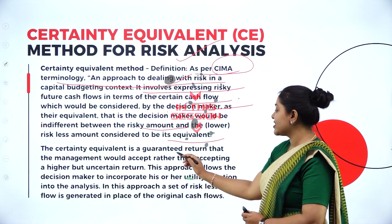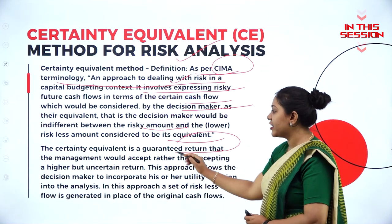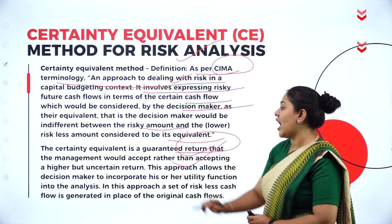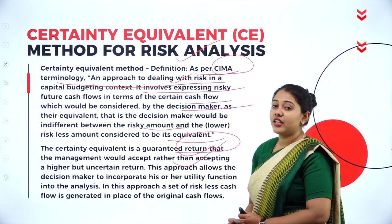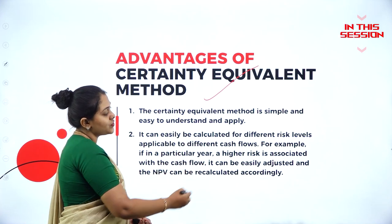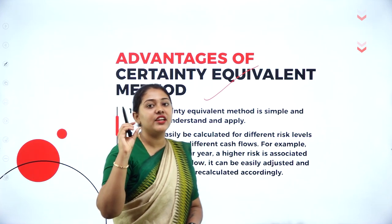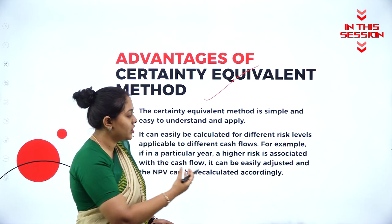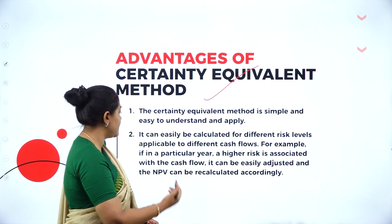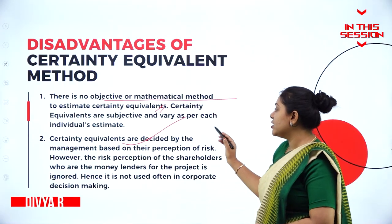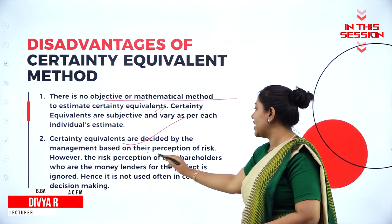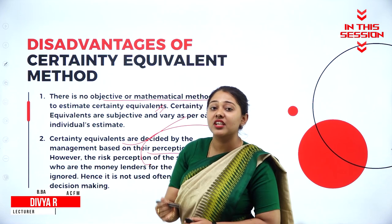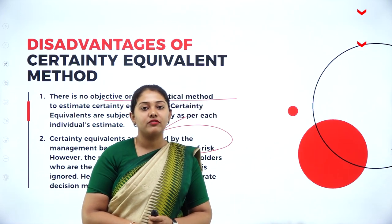The certainty equivalent approach is a guaranteed return that management would accept rather than accepting a higher but uncertain return. It is applicable to different cash flows, and the certainty equivalent coefficient is very easy to use once you know the certainty equivalent assumptions. Certainty equivalent coefficients are decided by management based on their perception of risk.